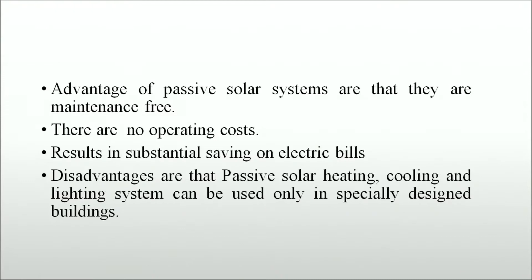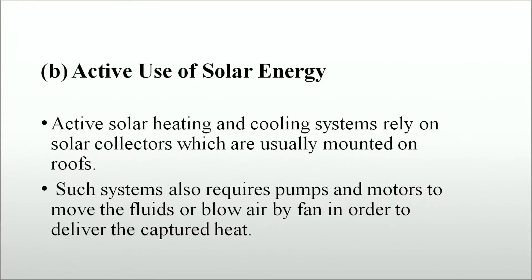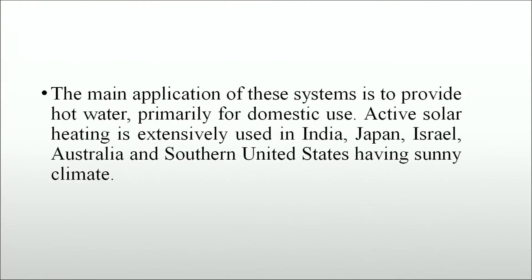The disadvantage is that passive solar heating, cooling and lighting systems can only be used in specially designed buildings. Active solar heating and cooling systems rely on solar collectors, usually mounted on roofs. Such systems also require pumps and motors to move fluids or blow air by fan to deliver the captured heat. The main application is to provide hot water primarily for domestic use. Active solar heating is used in India, Japan, Israel, Australia and southern United States.